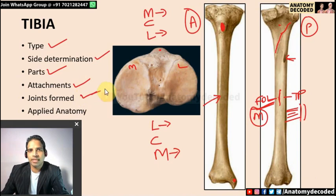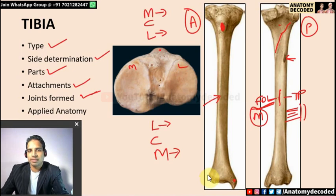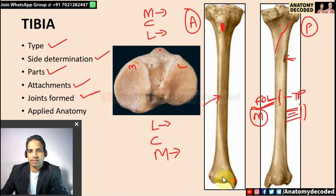Joints formed by tibia: the upper end forms the knee joint. On the lateral aspect there are three tibiofibular joints: superior tibiofibular joint (plain synovial), middle tibiofibular joint (syndesmosis), and inferior tibiofibular joint (syndesmosis). The joint between tibia and talus is the ankle joint — a hinge variety of synovial joint.